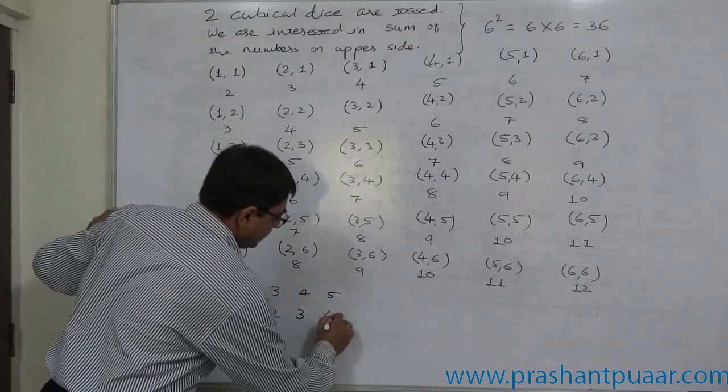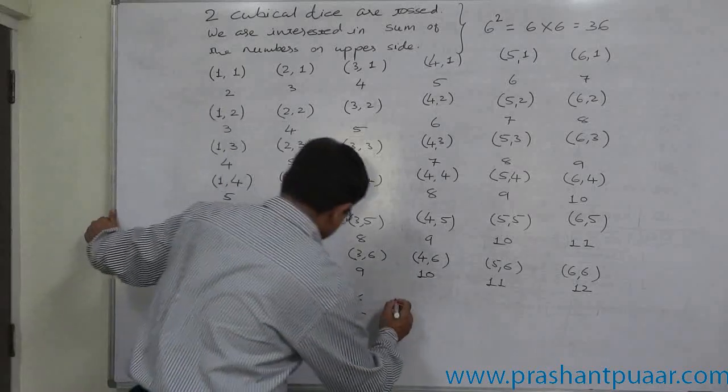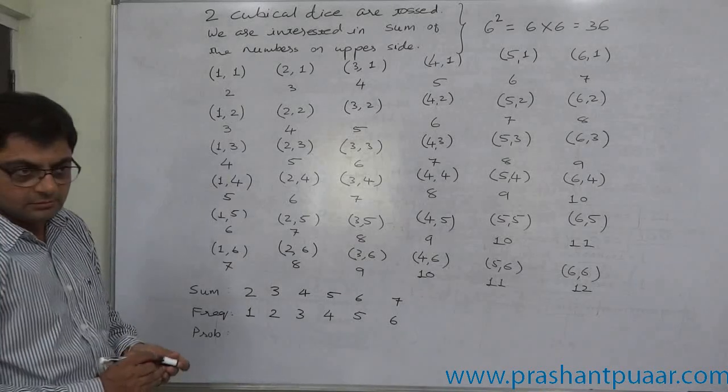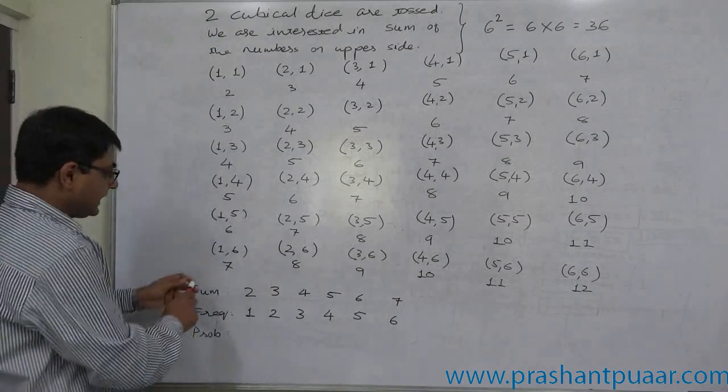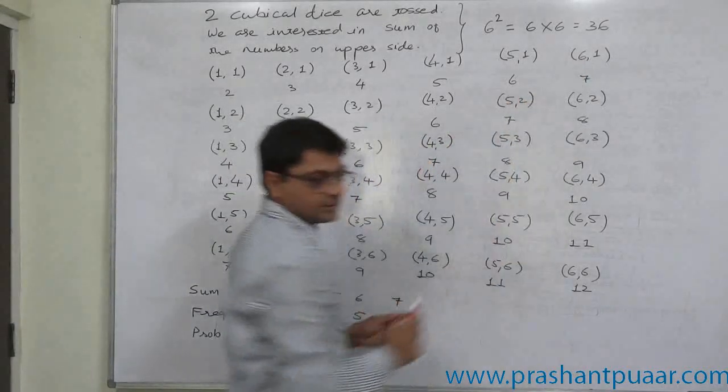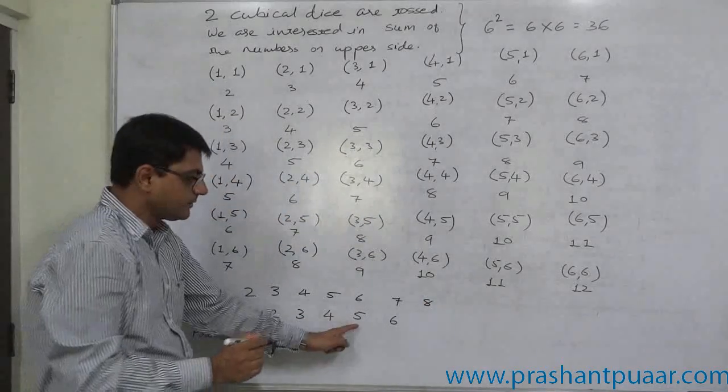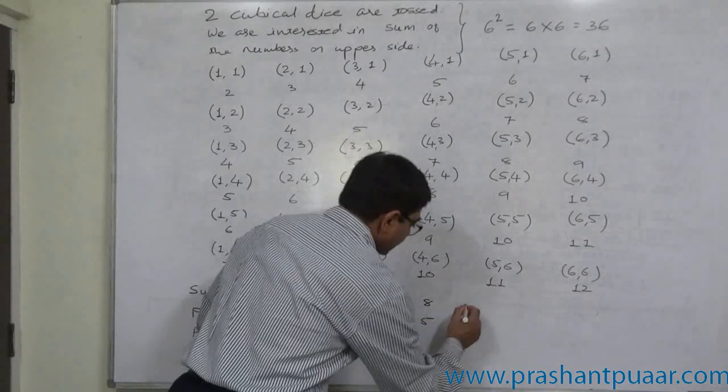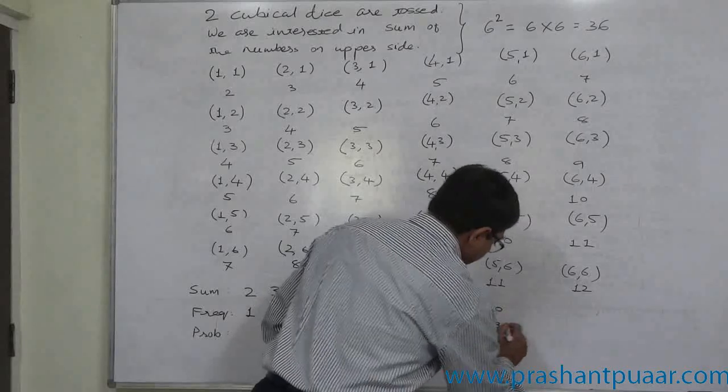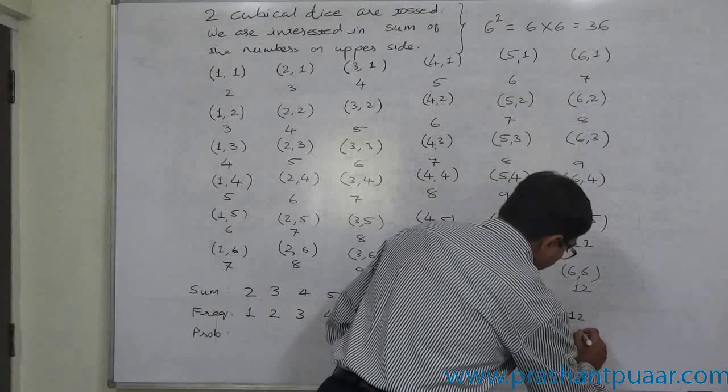Five is possible in four ways. Six is possible in five different ways. Seven in six different ways. This is the highest. Eight, again, five. Nine: four. Ten: three. Eleven: two. And twelve: once.